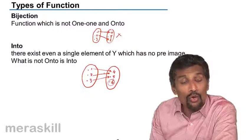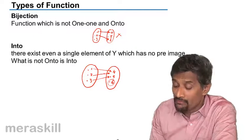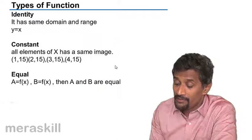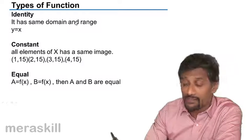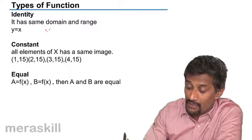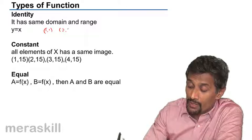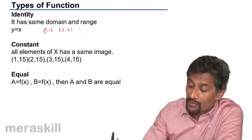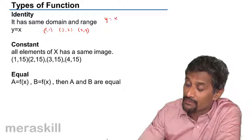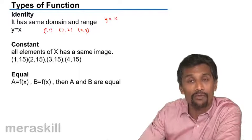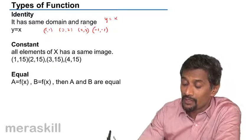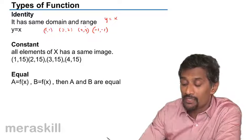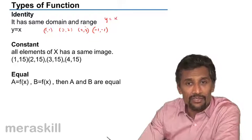So that covers into, onto, and one-to-one. Then identity function has the same domain and range. For example, 1 maps to 1, 2 maps to 2, 3 maps to 3 — the function is y = x. For any value of x there is a corresponding value, like -1 maps to -1. Then we call it an identity function.